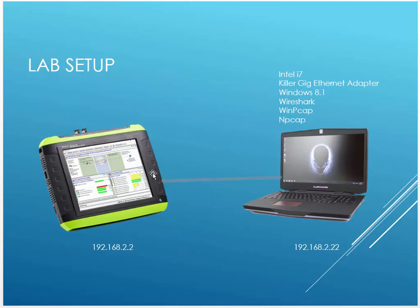I set up a lab: here's my traffic generator, there's my laptop — it's an Alienware i7 — and I'm using its built-in gigabit Ethernet adapter. I'm trying to replicate the most common setup you might have when using Wireshark. We've got Wireshark, then I put WinPCAP on and then switched to NPCAP as we went along. I gave them both IPs and put one copper Ethernet cable between them — no switches, no hubs — to keep the test methodology as simple as possible.